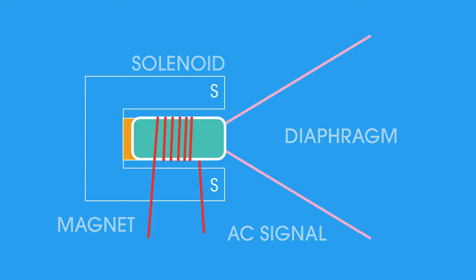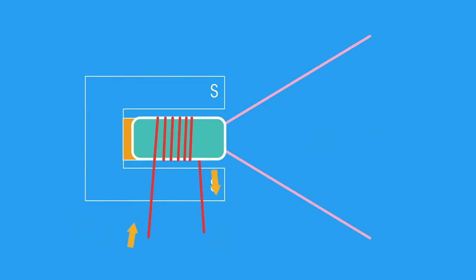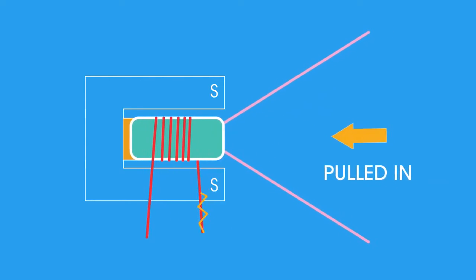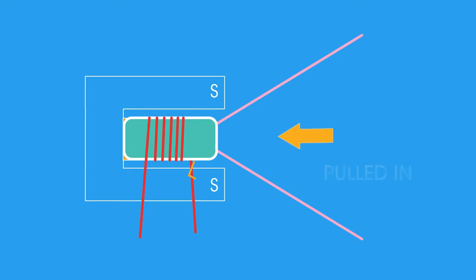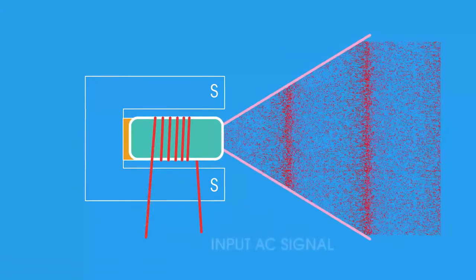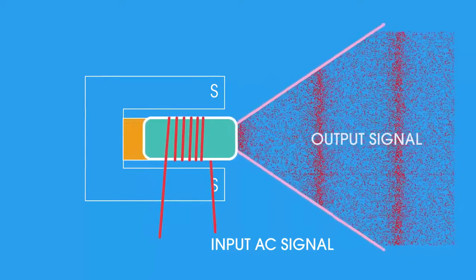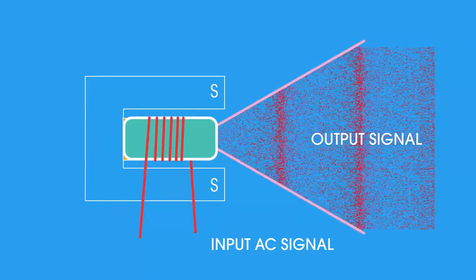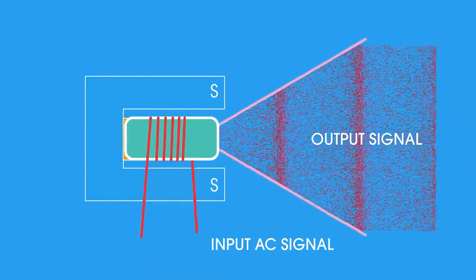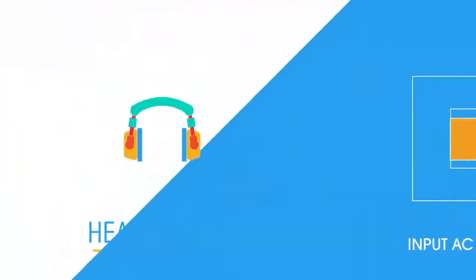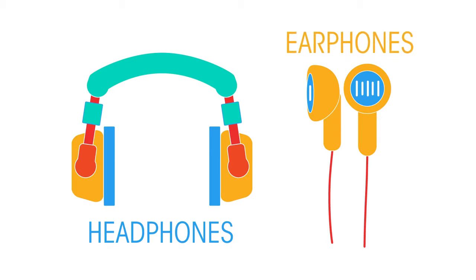The loudspeaker works by the motor effect. When a current flows in the solenoid, its magnetic field interacts with that of the permanent magnet. Depending on the direction of the current, the solenoid and the diaphragm with it are either pushed out of or pulled into the annular magnet. This creates a compression wave moving with the same frequency as the input electrical signal, which spreads out as a longitudinal sound wave. The output frequency matches that of the input AC signal, and the loudness or volume depends on the magnitude of the voltage of that signal — higher voltages cause a larger motor effect. Headphones or in-ear buds are just a small version of this design.